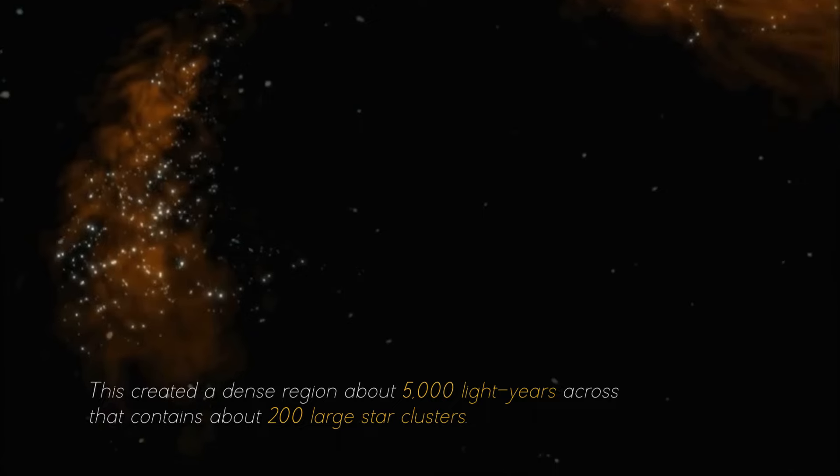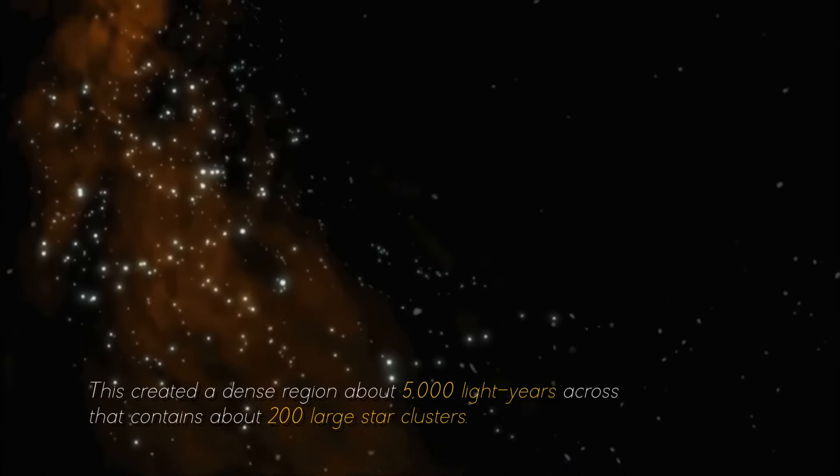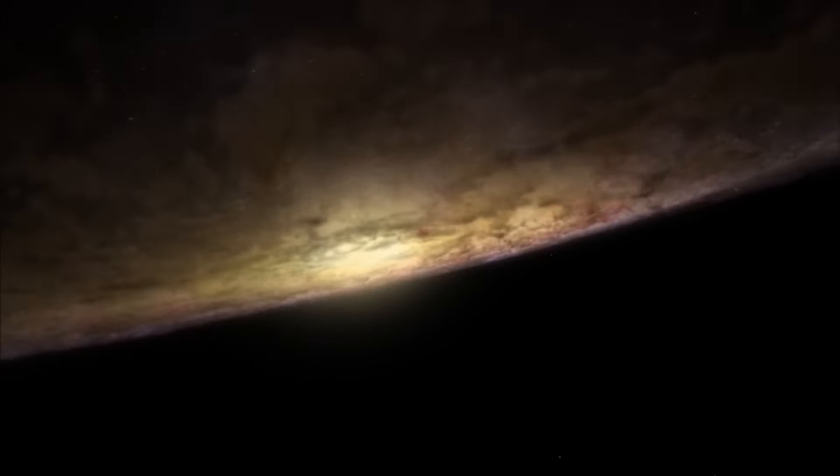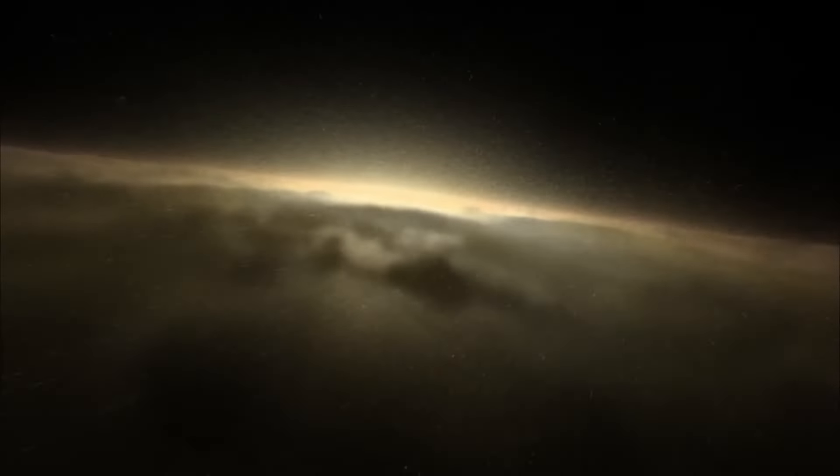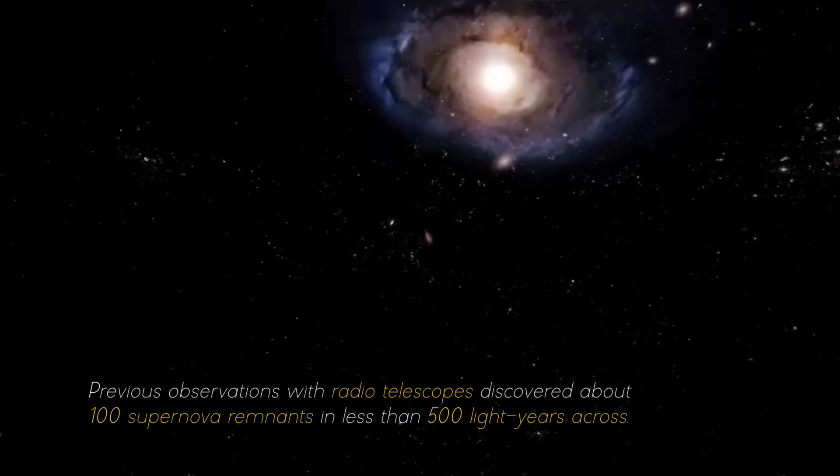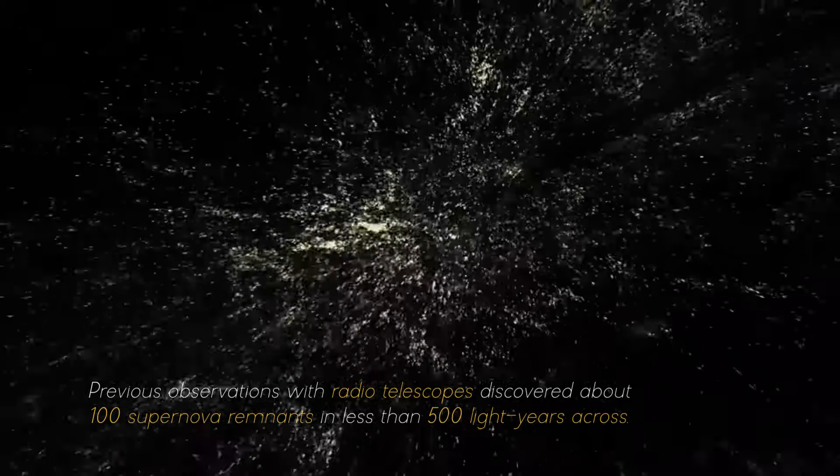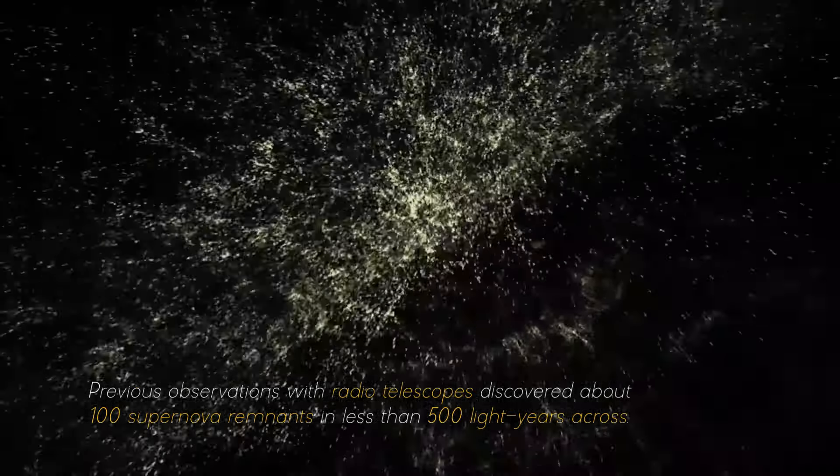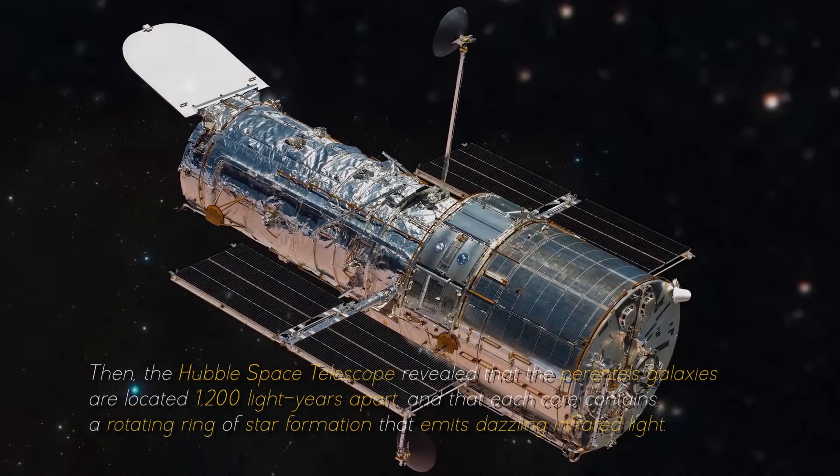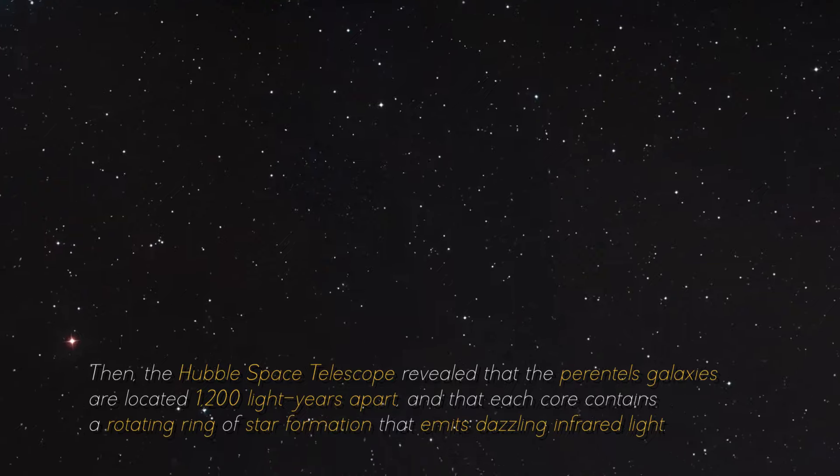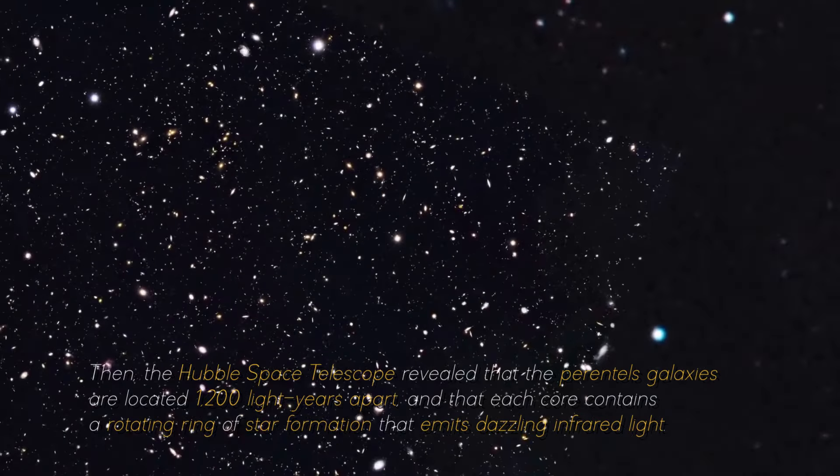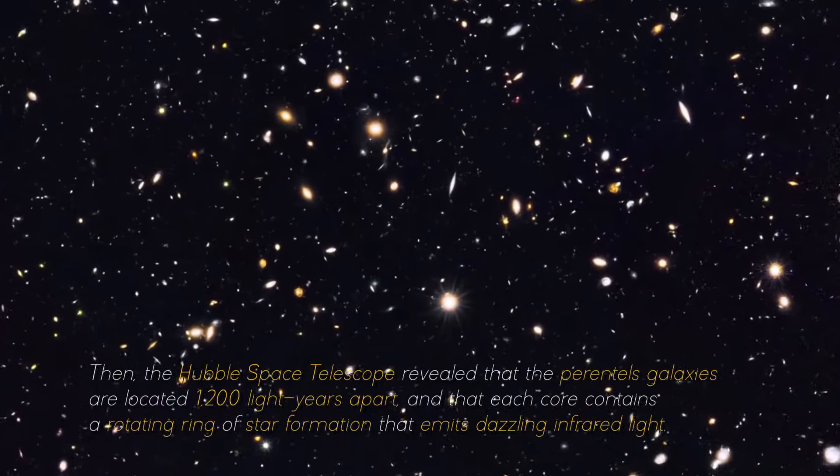This created a dense region about 5,000 light-years across that contains about 200 large star clusters. Surprisingly, this small area contains as much gas as the entire Milky Way. Previous observations with radio telescopes discovered about 100 supernova remnants in less than 500 light-years across. Then, the Hubble Space Telescope revealed that the parental galaxies are located 1,200 light-years apart, and that each core contains a rotating ring of star formation that emits dazzling infrared light.